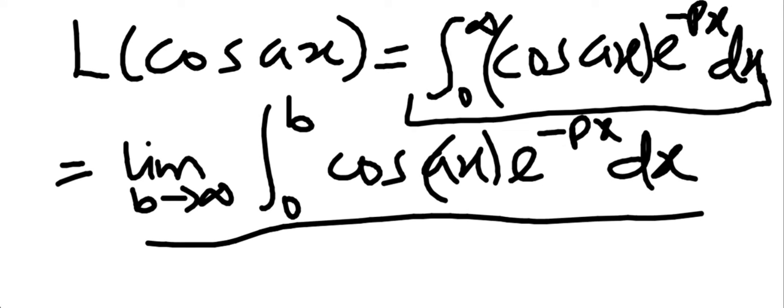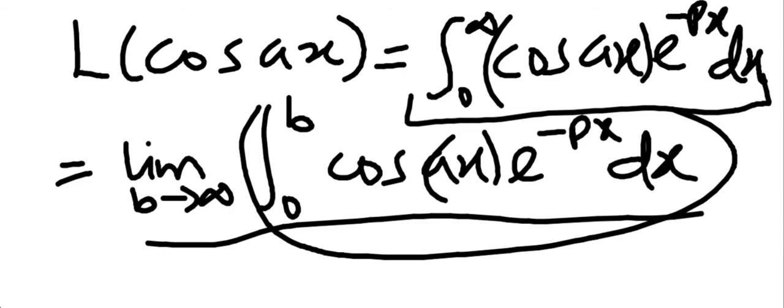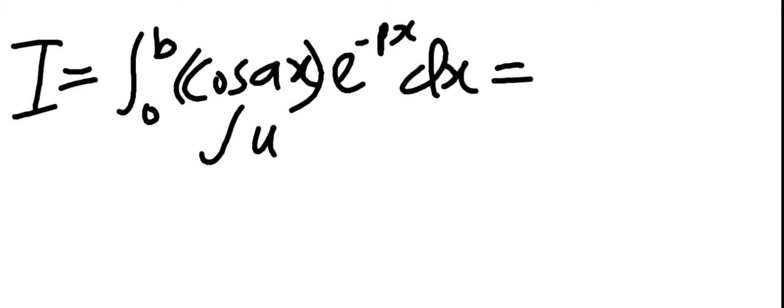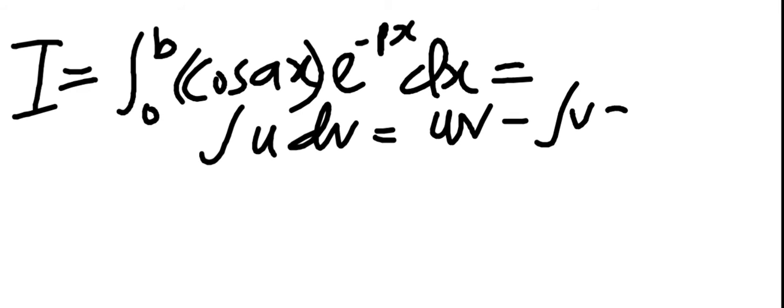Before we evaluate this, let's work on this side. To integrate a trig function multiplied by an exponential function, you need to name that integral. For this video, we are going to be naming that integral I. So I is equal to the integral from 0 to B of cos AX times exponential minus PX DX. To do this, we are going to use the product rule — the integration by parts formula: integral of U DV equals U V minus integral of V DU.